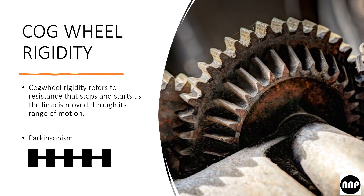In cogwheel rigidity, resistance stops and starts as the limb is moved through the range of motion. When you try to move the limb, there is increased resistance, then a free movement, then increased resistance again, then free movement — repeating like a cogwheel.